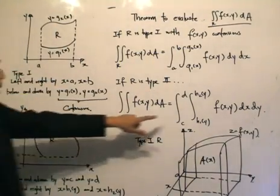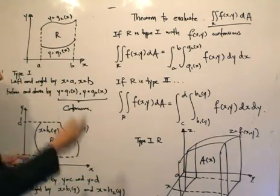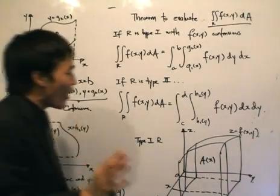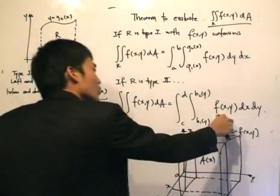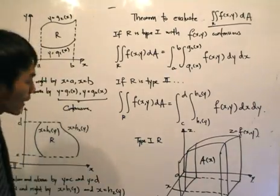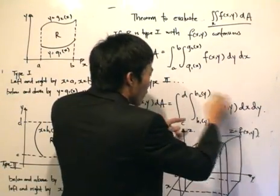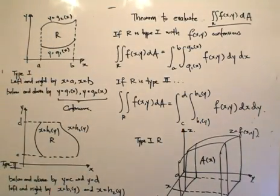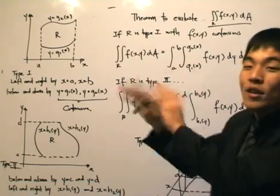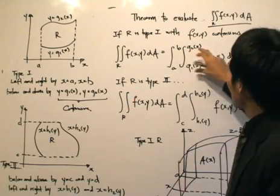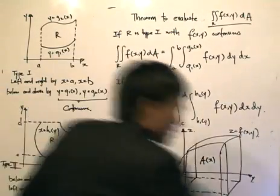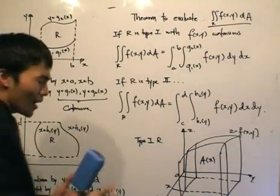If it's type 2, we integrate the same function of x and y, but first we integrate with respect to x, and the limits are the functions h1 and h2 in terms of y. Then after that we integrate with respect to y, and the limits are c and d. One thing to note: the constant limits — a and b, and c and d — are always on the outside, and the limits which are functions are always on the inside.